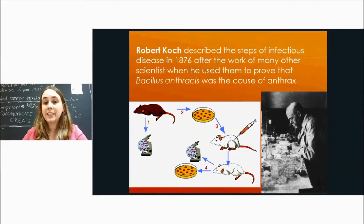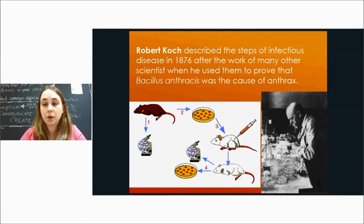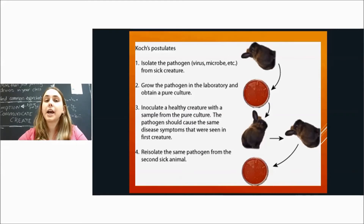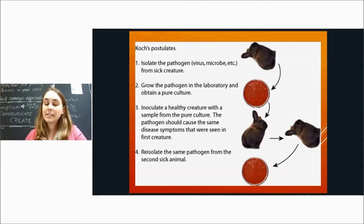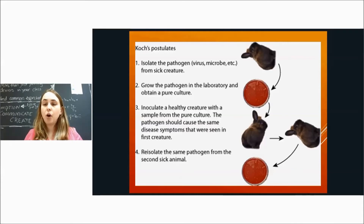To figure out which organism causes which disease, we look at the work of Robert Koch. Koch described the steps of infectious disease in 1876, using them to prove that Bacillus anthracis was the cause of anthrax. What he did was first isolate the pathogen from a sick organism — he took organisms sick with anthrax, isolated a bacteria present in abundance in sick organisms but not in healthy ones, and grew them in a culture in a petri dish until he had a pure culture of only Bacillus anthracis.